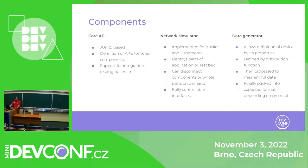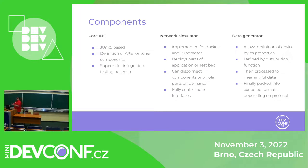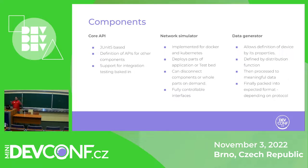And then there's the last part — the data generator. It's a component that allows you to define the data you want to produce for your system under test. For example, if you want to simulate a thermometer, you know there is some distribution of data that will be produced, and you can describe this distribution for the data generator, then encapsulate it into a network protocol, which will then produce it for your application.